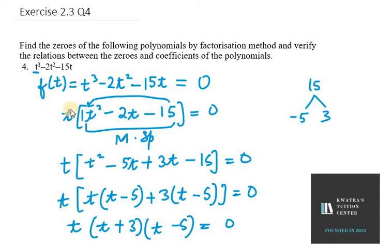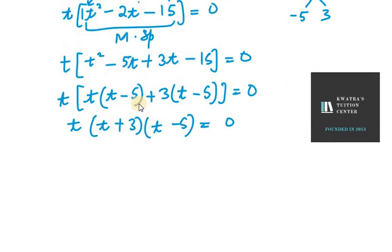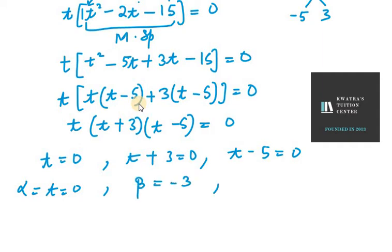So here we are with 3 values, all 3 zeros: that is t equals 0, and we have t plus 3 equals 0, then we have t minus 5 equals 0. So the first one is t equals 0, that is alpha. Now the second one will be beta. Beta will be minus 3 and gamma will be positive 5. So we have now three zeros of cubic polynomial: alpha, beta, and gamma.